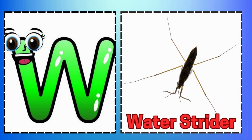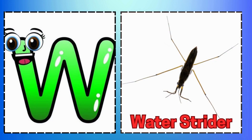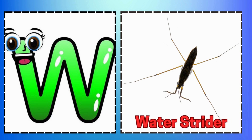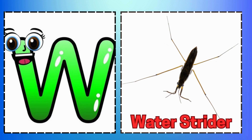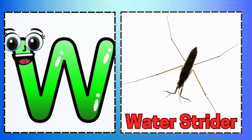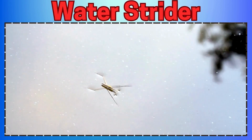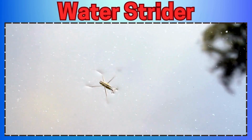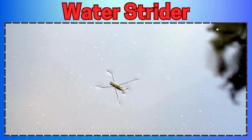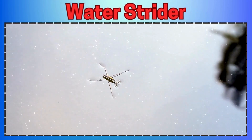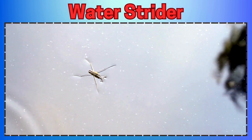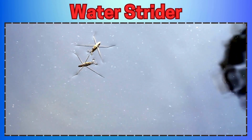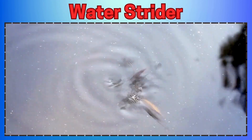W is for Water Strider. Y is for Yellow Jacket Watch out for its Sting. Z is for Zebra Swallowtail Spreading its Wings.